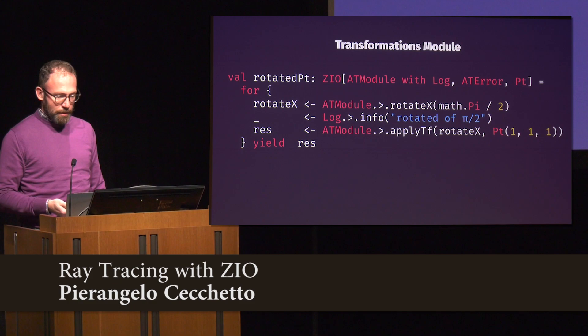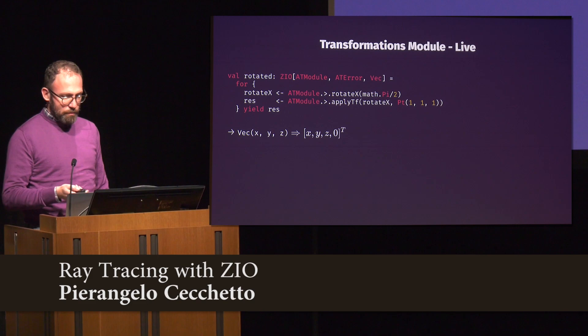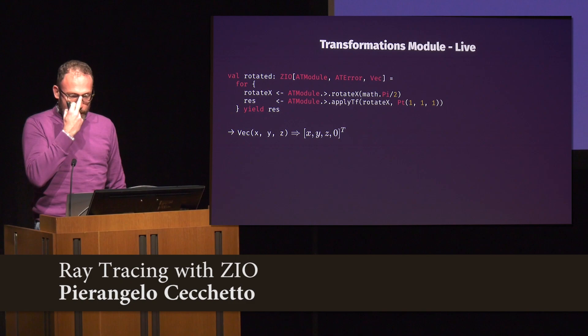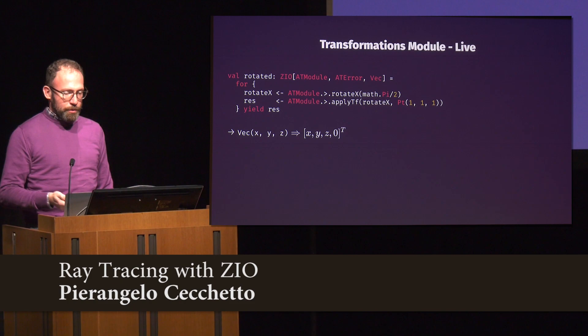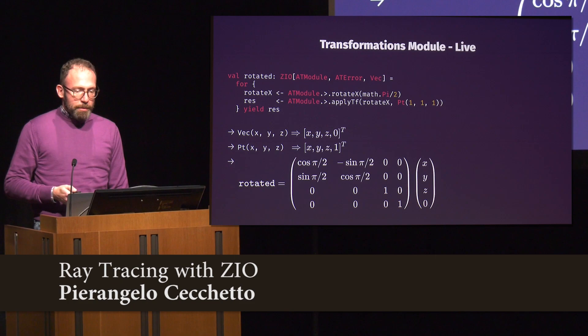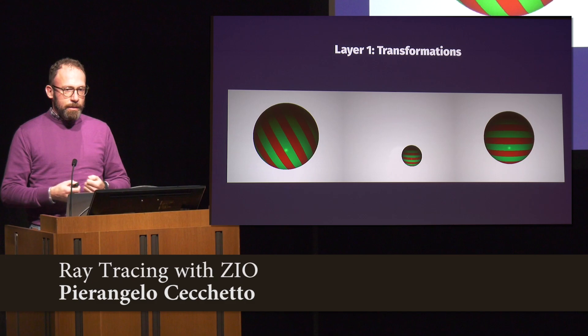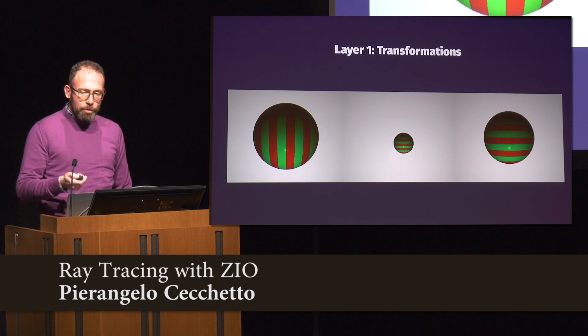The live implementation of the transformation module is pretty simple. If we map every vector to a column matrix where the last value is zero, and every point to a column matrix where the last value is one, then all we need is matrix multiplication. Backing the implementation of our affine transformation module with matrix multiplication, we are able to provide generic transformations that can rotate, translate, and scale our objects.